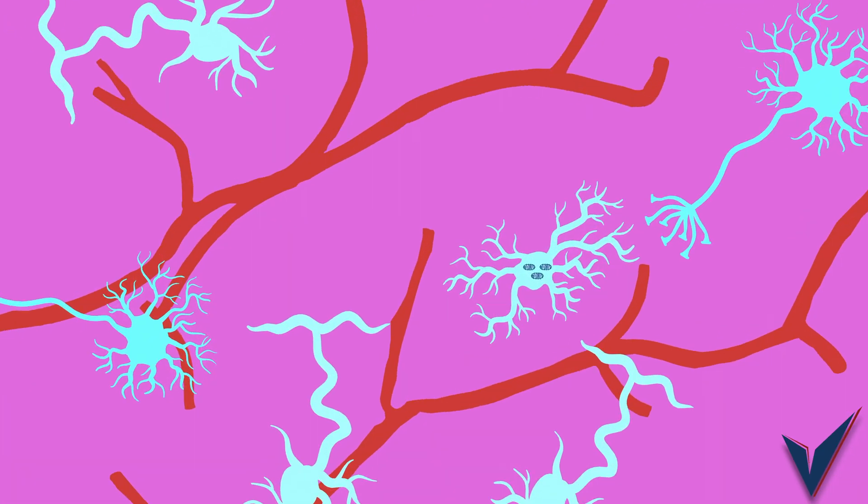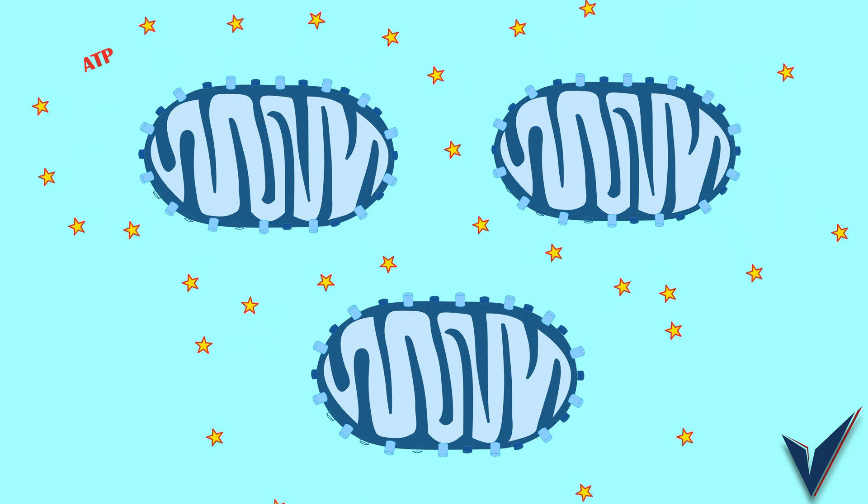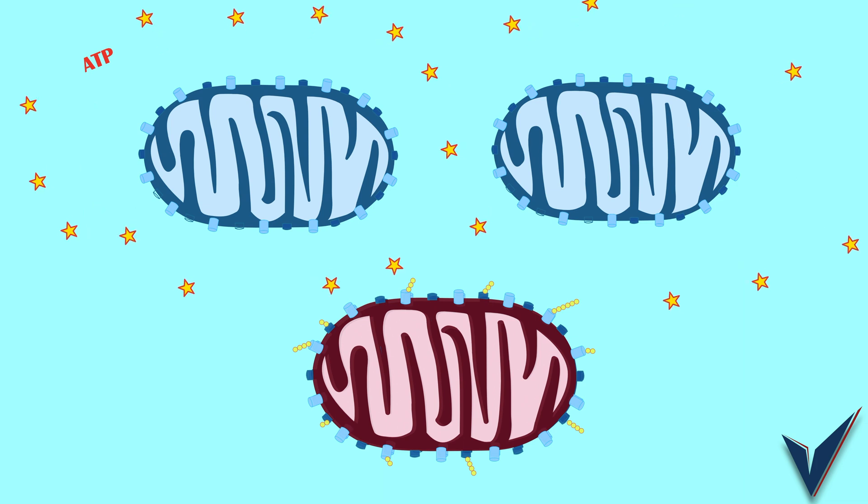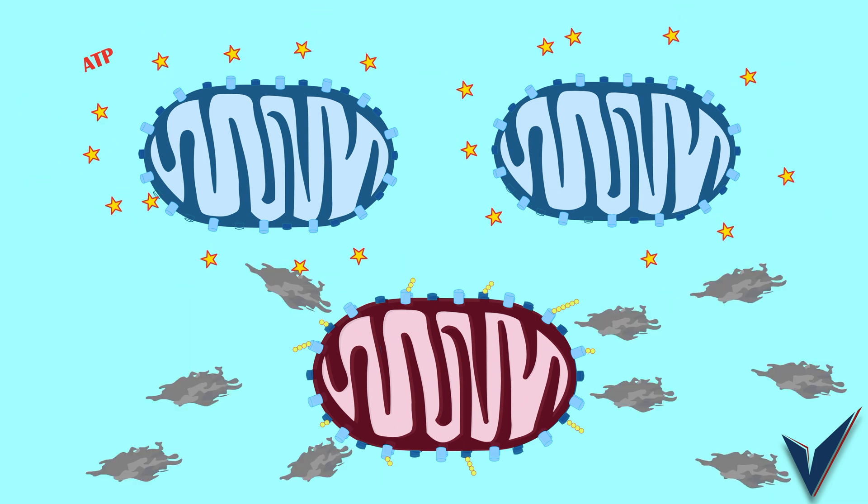In order for the body to function, our cells require energy, which is supplied by mitochondria in the form of ATP. Like all things in nature, mitochondria become damaged frequently, causing them to produce less ATP and more harmful reactive oxygen species.